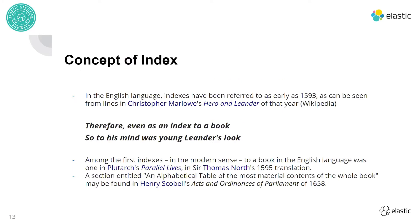The concept of indexes in books is quite old — it's been used since the 15th and 16th centuries. There's a reference to an index in a poem dated to 1593 from Christopher Marlowe's Hero and Leander, which refers to an index as: 'Therefore even as an index to a book, so to his mind was young Leander's look' — meaning it was as quick for him to recall someone's look as it is to recall a particular section from an index.